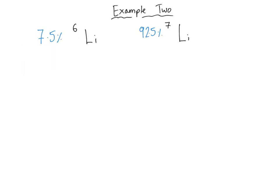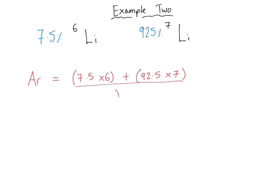If we finish by looking at one further example, we're going to return to lithium, where lithium-6 has got an abundance of 7.5% and lithium-7 has got an abundance of 92.5%. To calculate the relative atomic mass, we take the abundance of lithium-6 — 7.5 — multiplied by 6, and add that to the abundance of lithium-7 — 92.5 — multiplied by the mass number of lithium-7, which is 7. Then divide by the sum of the percentages, which is 100. That gives us our final answer for the relative atomic mass of lithium, usually given to one decimal place.